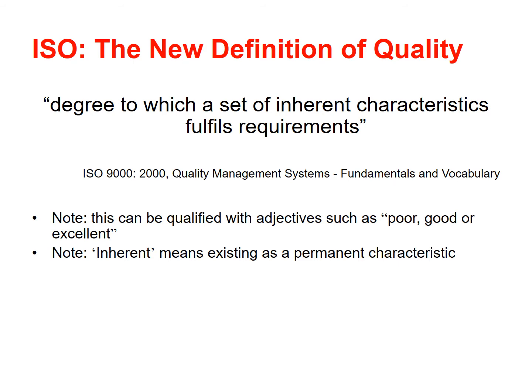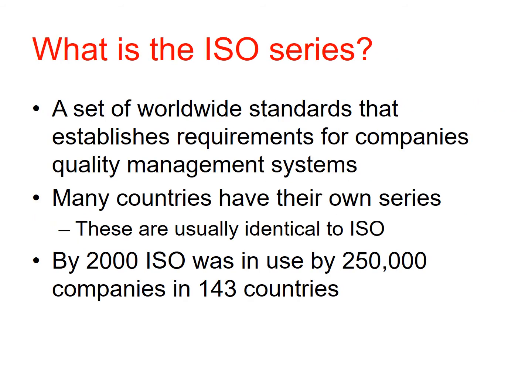'Inherent' actually means existing as a permanent characteristic. The ISO series is a set of worldwide standards that establishes requirements of companies' quality management systems. Many countries have their own series, but they are usually identical to ISO. By 2000, ISO was used by 250,000 companies in 143 countries, so pretty much everyone around the world is using the ISO series of standards to manage their business and manufacture things.